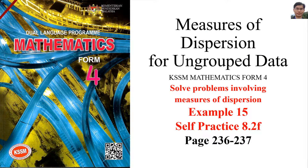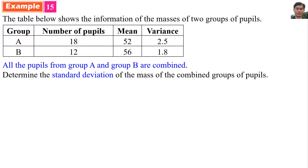Measure of Dispersion for Ungrouped Data, KSSM Mathematics Form 4 — Solve Problems involving Measure of Dispersion. Example 15: The table below shows the information of the masses of two groups of pupils. All the people from Group A and Group B are combined. We need to find the standard deviation of the masses of the combined group of pupils.